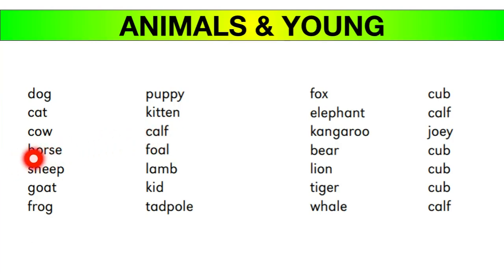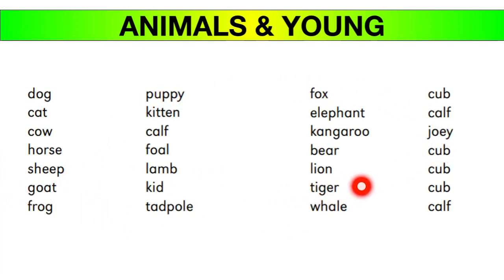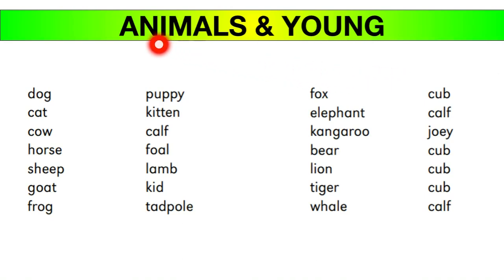A horse's young one is a foal. All these names — dog/puppy, cat/kitten, cow/calf, horse/foal — are common nouns under the category of animals and their young ones. They all come under common nouns.